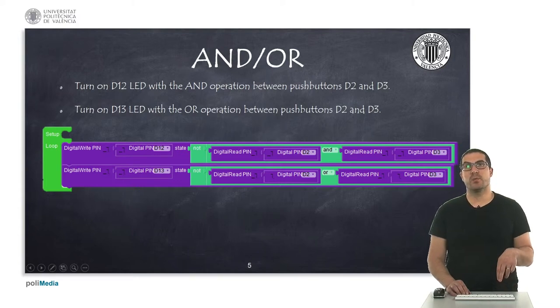Here what we're doing is that whenever we push both of them, so they are low, then I will show or I will blink on the LED connected to pin 12. Then if I push one of them, then I will blink the LED connected to pin 13.